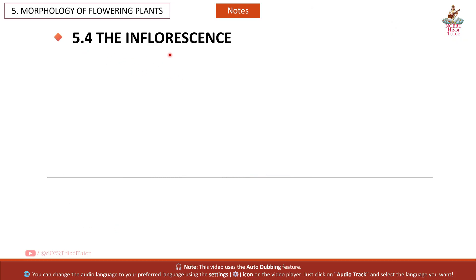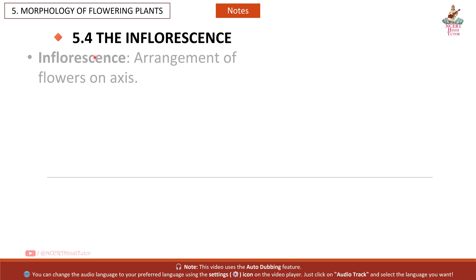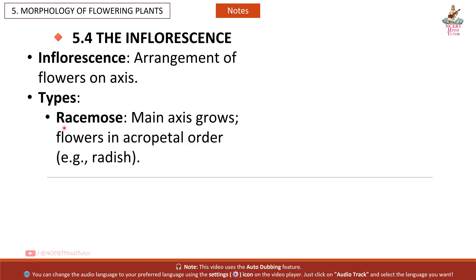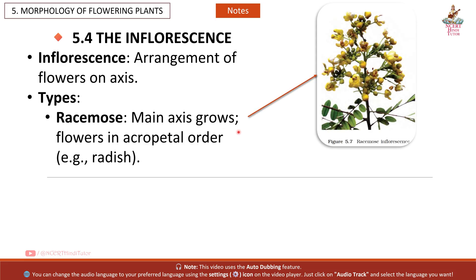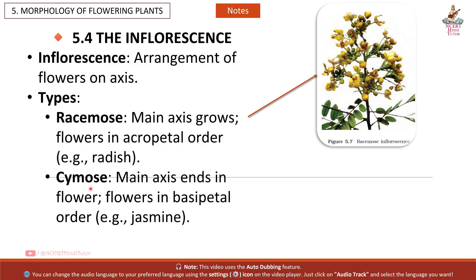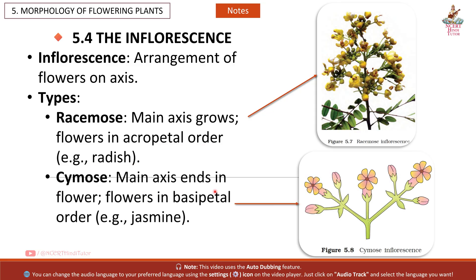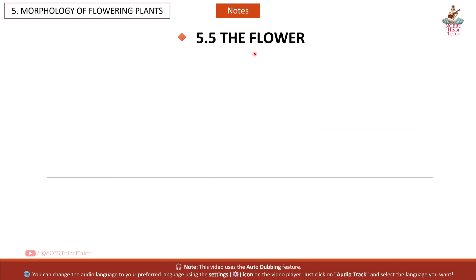5.4 The Inflorescence: Arrangement of flowers on the axis. Types: Racemose — main axis continues to grow, flowers in acropetal order, e.g. radish. Cymose — main axis ends in a flower, flowers in basipetal order, e.g. jasmine.